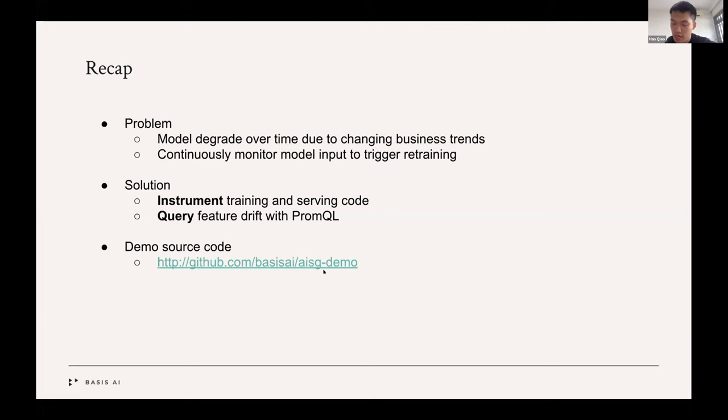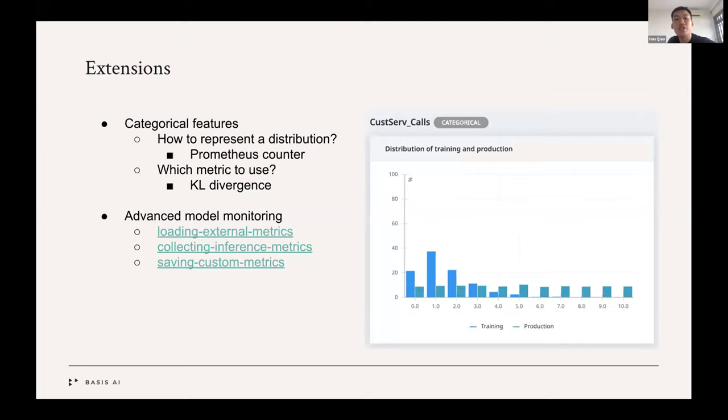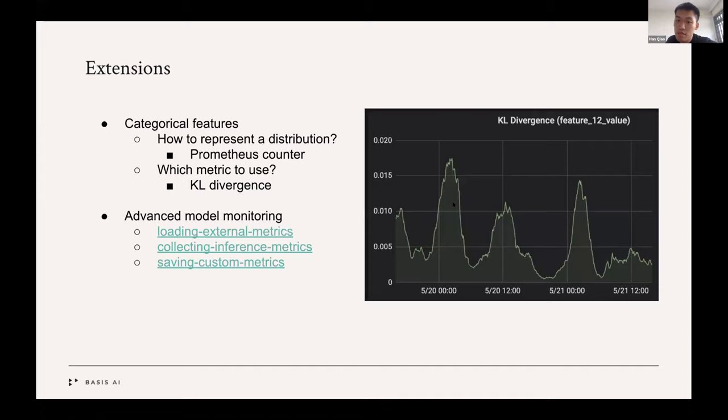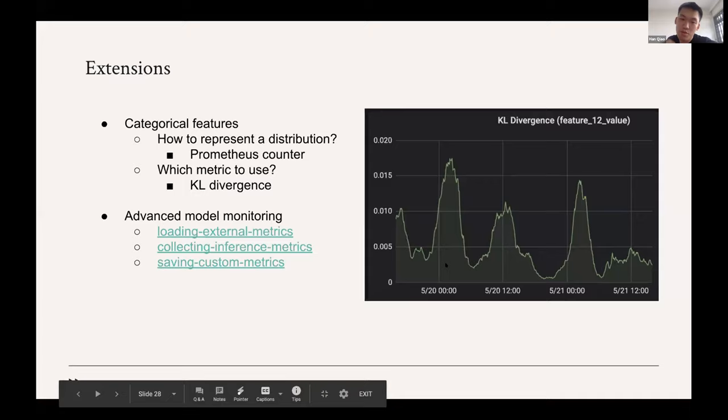Of course, there are some extensions that we can do for these methods. We didn't cover is what do we do for discrete features. So we use Prometheus counters to track features that have discrete values. And for drift detection, we use KL divergence metric. And you can see this is the implementation in Prometheus. But this is what we did for some production data. And you can see it has a very periodic pattern. So we probably, as a data scientist, you probably want to look at why the differences usually happen at this time of the day. And perhaps you want to customize your model just for that particular period.